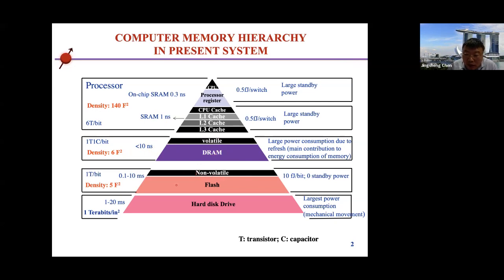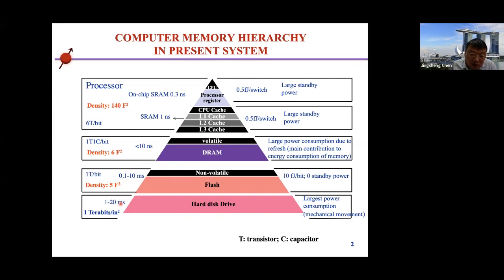Below the volatile memories, we have non-volatile flash memory — the kind used in laptops. Flash memory is built with one transistor per bit, so the density is high, but the speed becomes much slower: around 0.1 to 10 milliseconds, because we need to tunnel tiny electrons to the gate during writing. Below flash is the hard disk drive, which uses mechanical movement, making it the slowest — around 1 to 20 milliseconds — but the density is much larger, now more than 1 terabit per square inch.